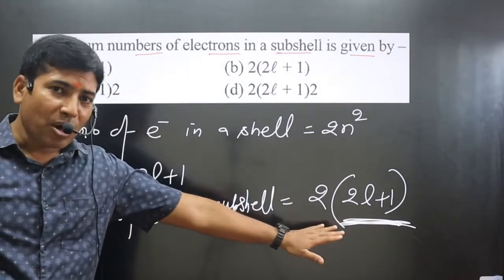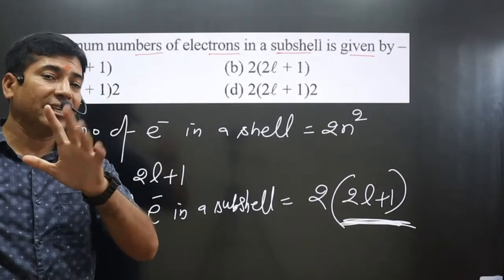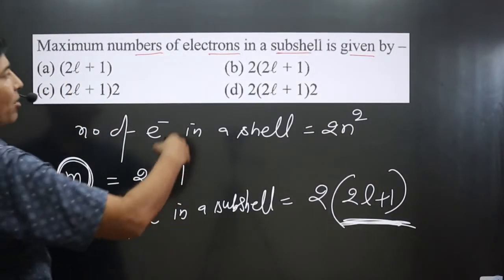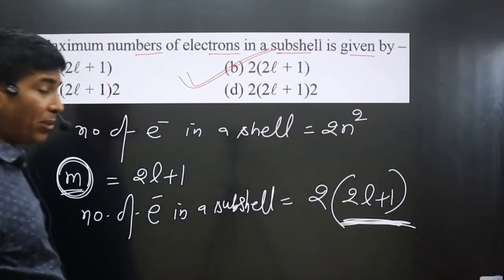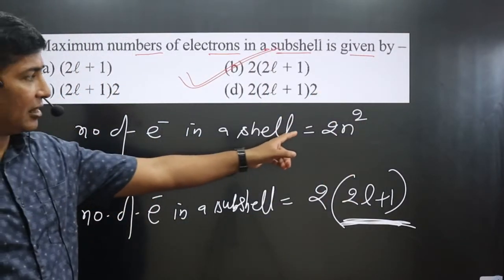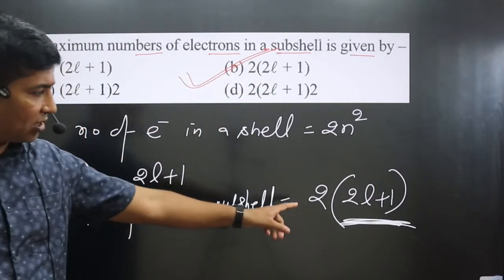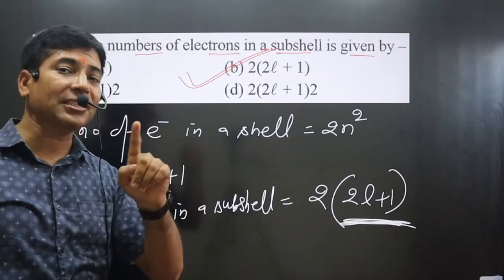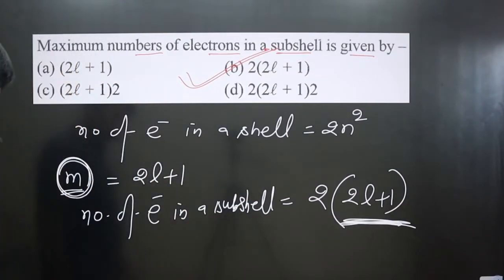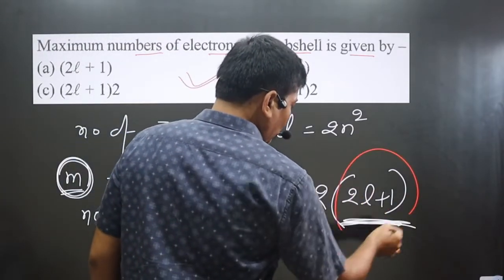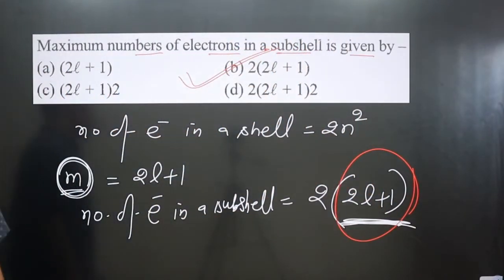Using this formula, we can calculate the total number of electrons present in a subcell. Option B is correct. Keep in mind: to calculate electrons in a cell, use 2n²; in a subcell, use 2(2L + 1), where L is the azimuthal quantum number. To find only the total number of orbitals, use 2L + 1. If you like this video, please share and subscribe to the channel.